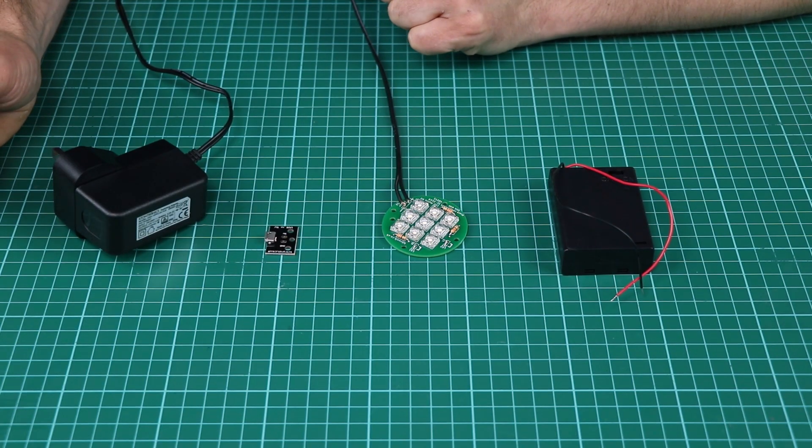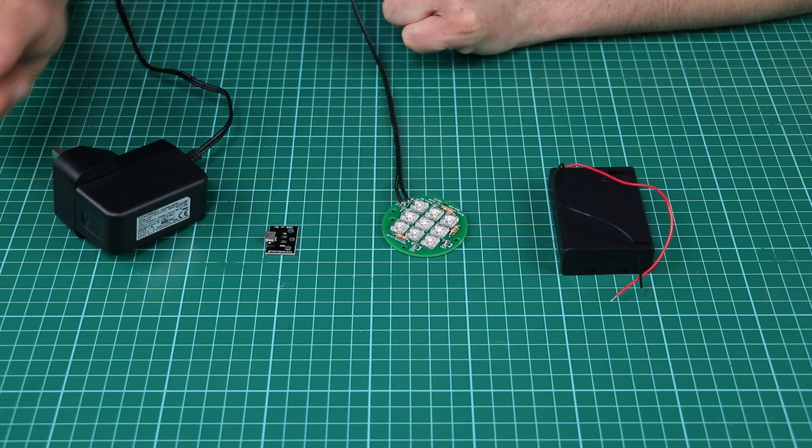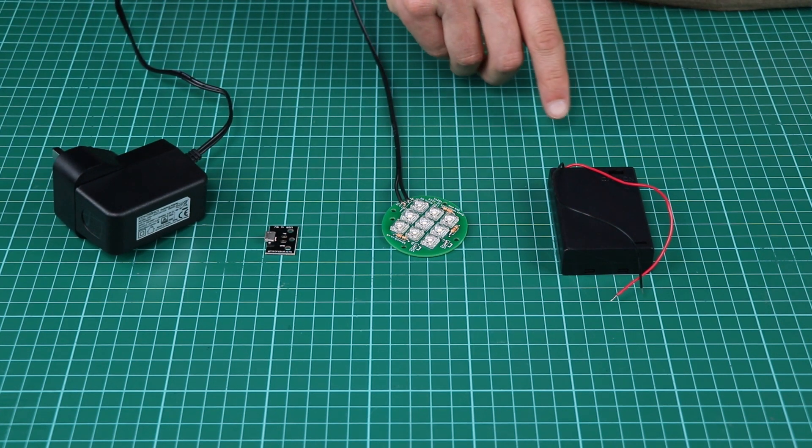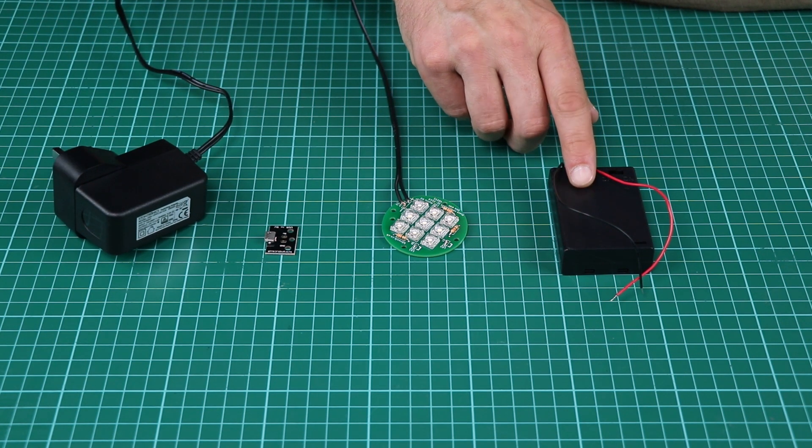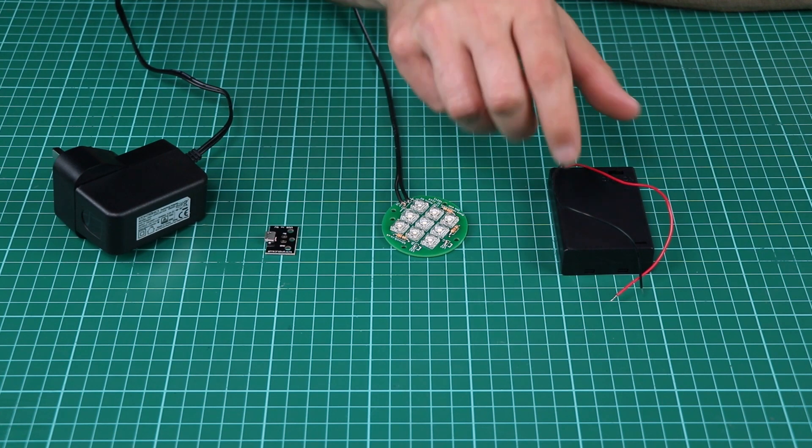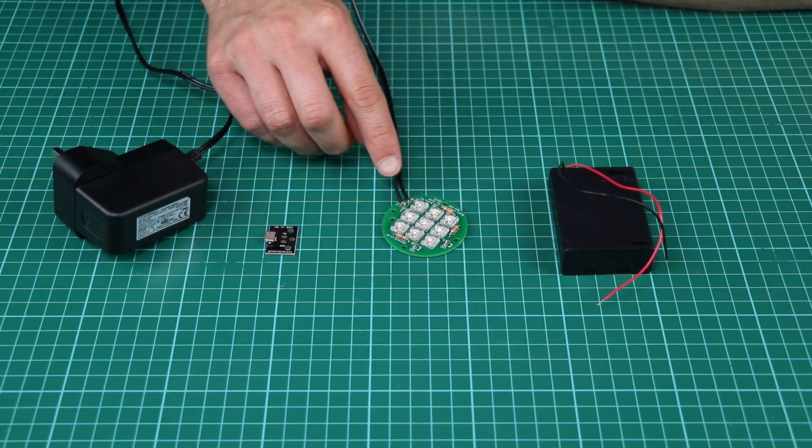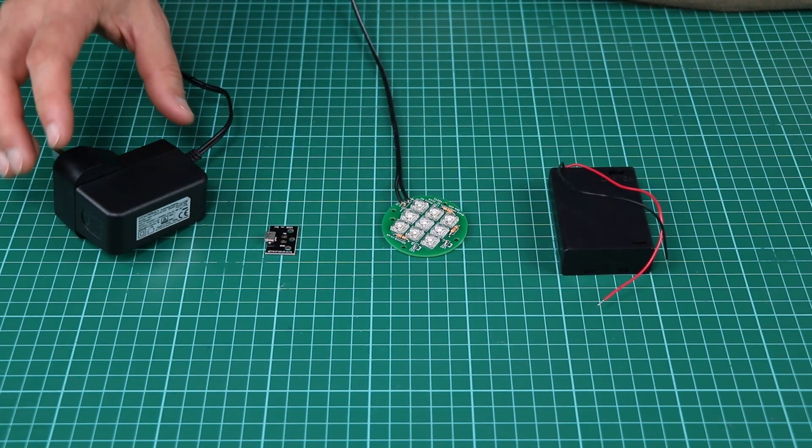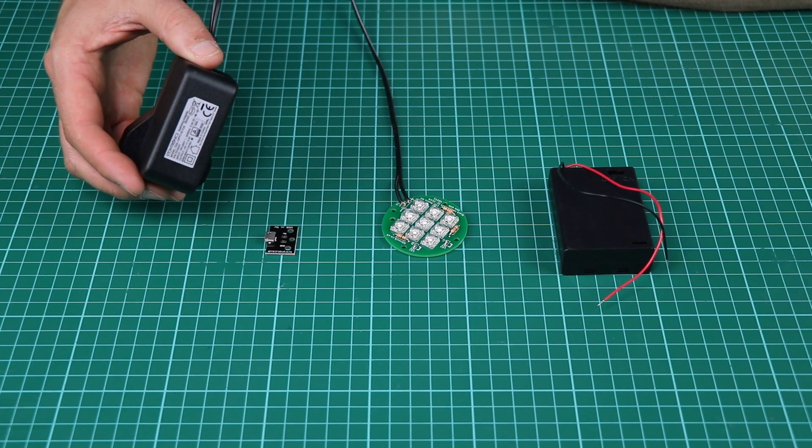There are lots of ways in which you could power this kit, and we have some examples here. One way would be to use a simple battery box - this one has an on-off switch included, and you would solder these leads to the power input. Or you could use a 5-volt power supply like this one, and again you would connect them to the power input ports.